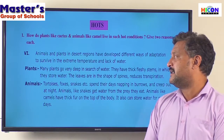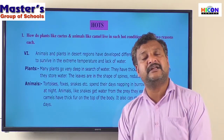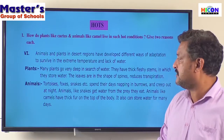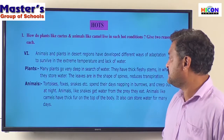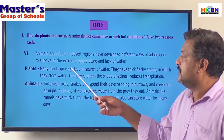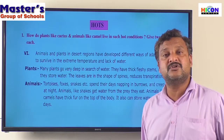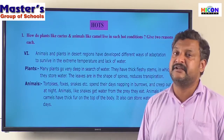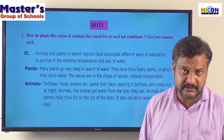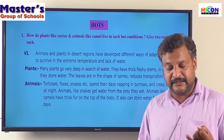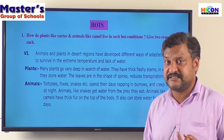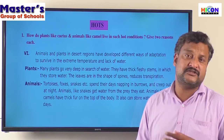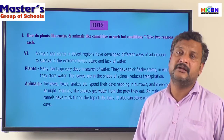Most plants like the cactus that live in the desert region have three specialities: first, a root system which can go very deep and farther in search of water; second, thick fleshy stems; third, thorny leaves.